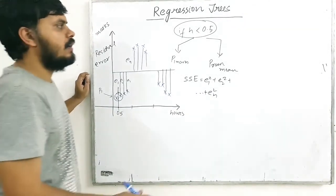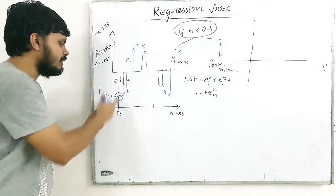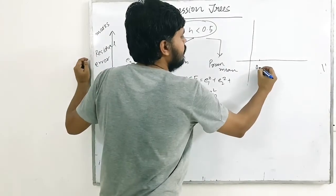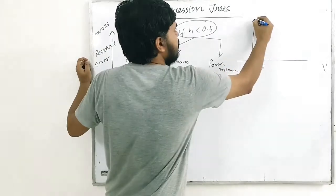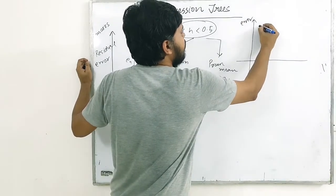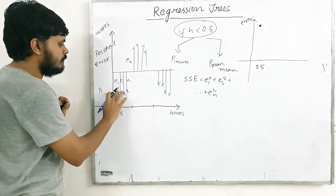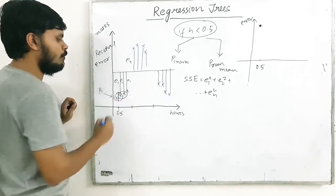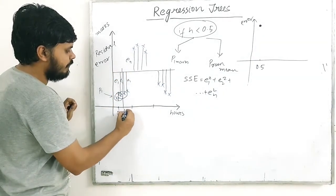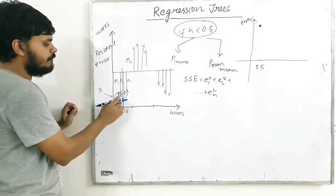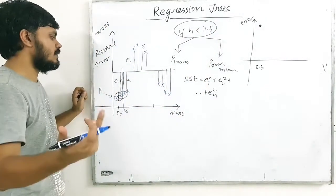So what we're doing is plotting a graph: on the x-axis is the splitting value (0.5 in this case), and on the y-axis is the sum of squared errors for that split. Let's say that gives us some error value. Now we forget this split and move to the next two points. Their mean might be 1.5 — so 1.5 becomes the second splitting criterion.